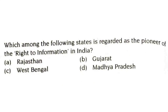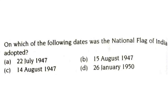Which of the following states is regarded as the pioneer of the right to information in India? West Bengal is regarded as the pioneer of the right to information. On which of the following dates was the national flag of India adopted? It should be 22nd of July 1947 — on this date the national flag of India was adopted.